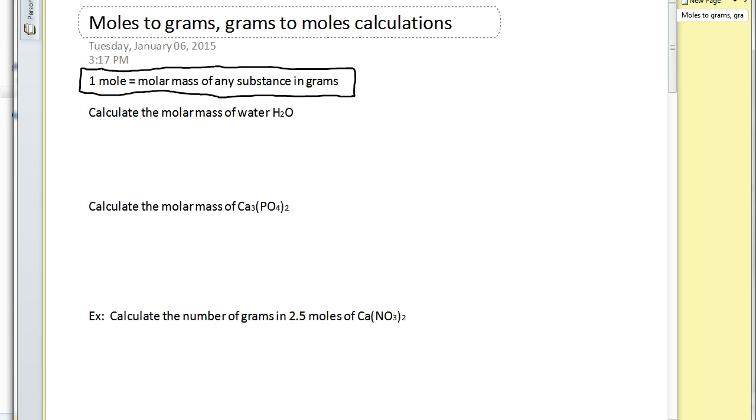So our first example here is we're going to be asked to calculate the molar mass of water. So just as a review for you, and I know a lot of you know how to do this already, but water has a formula of H2O and we know that this 2 here belongs to the H, and so that gives us two hydrogens. So we're going to take the number 2 and multiply it by the molar mass of hydrogen. I look on the periodic table, the molar mass is the bottom number typically, and for hydrogen is 1.01.